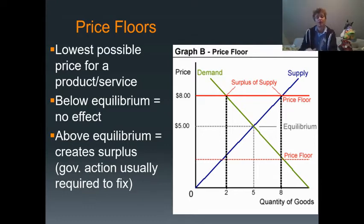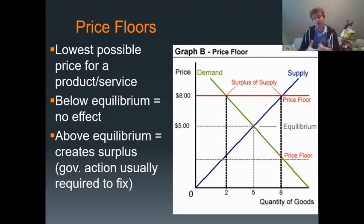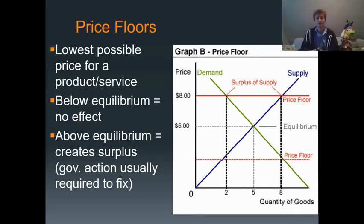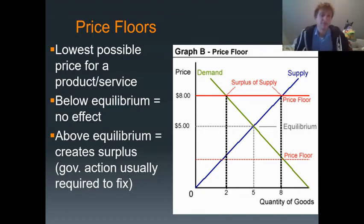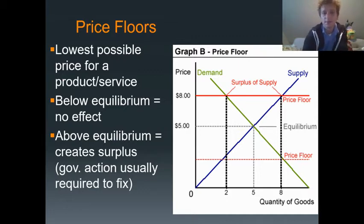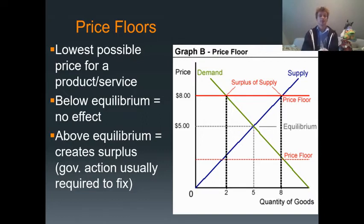Price floors are the opposite, as you would assume. This is when you have a lowest possible price for a good or service. It's meant to protect producers because it sets an artificially higher price. Looking at the graph, if the price floor is placed above equilibrium, it is effective because it sets the lower bound of the price above where the market would naturally settle.